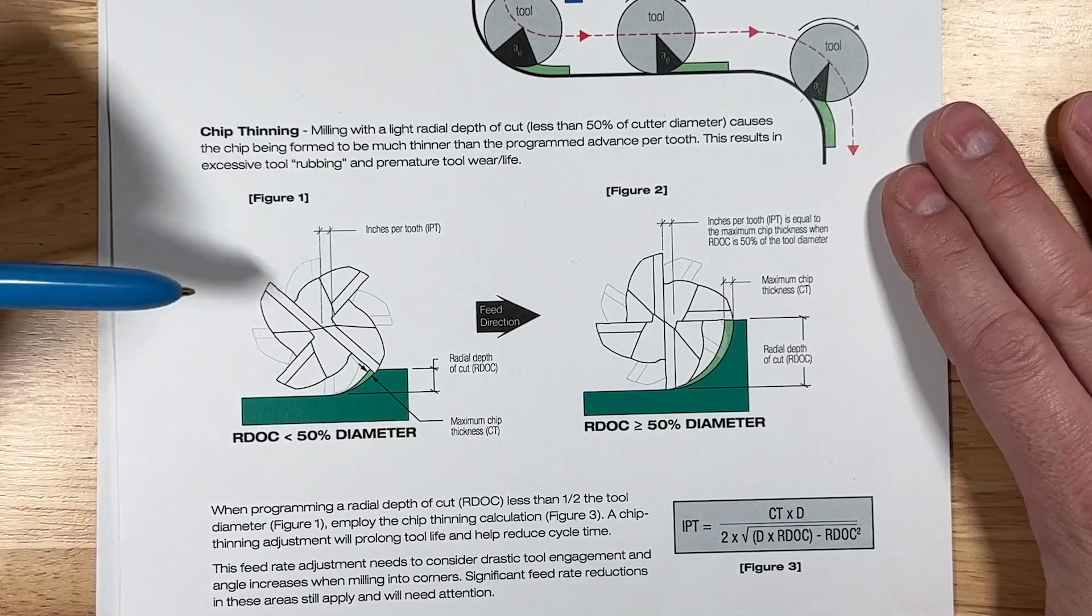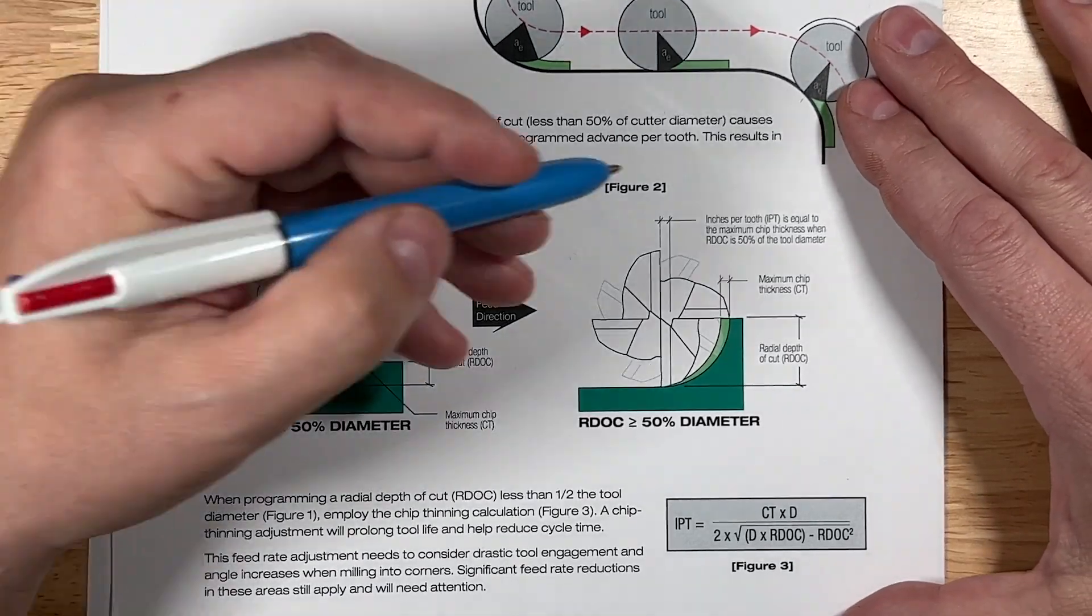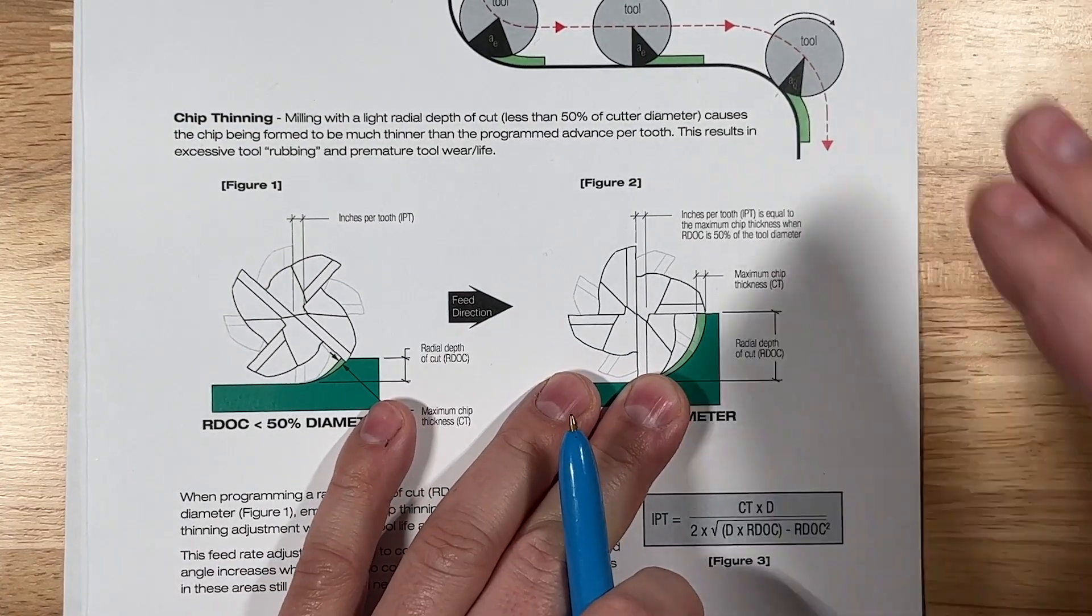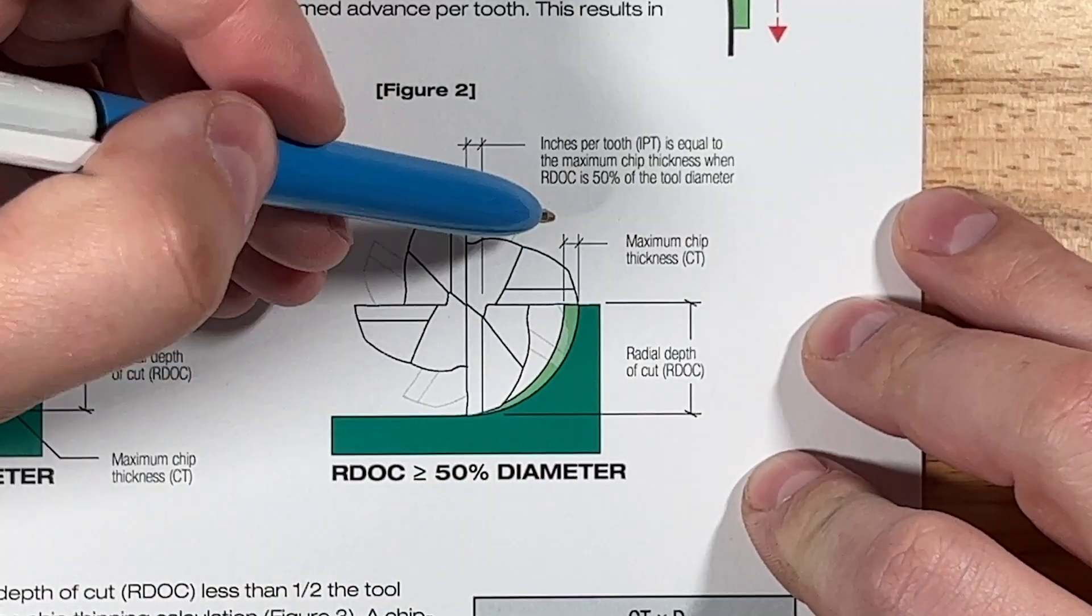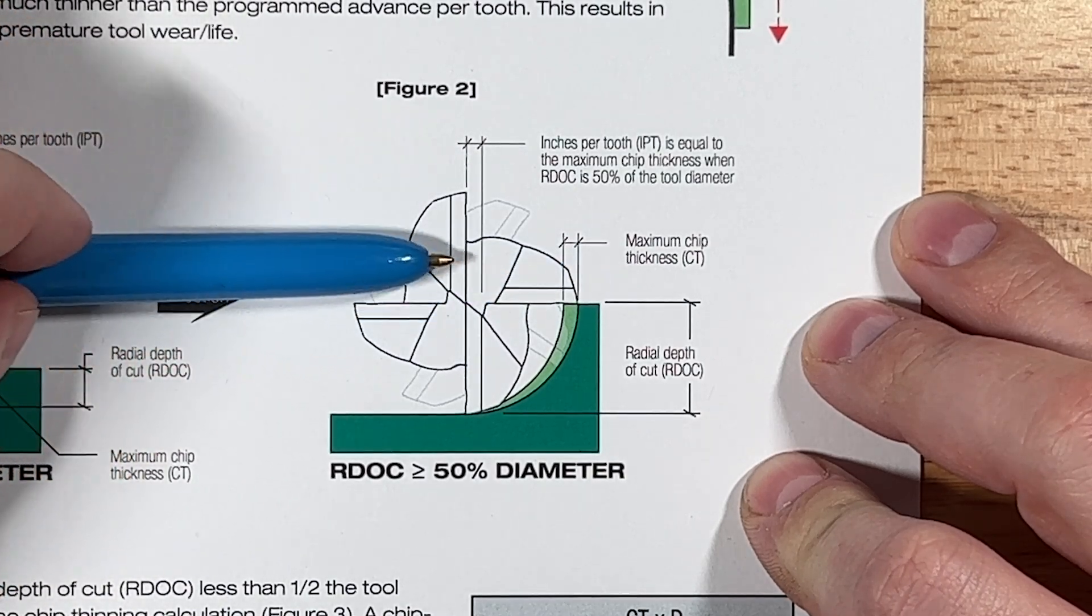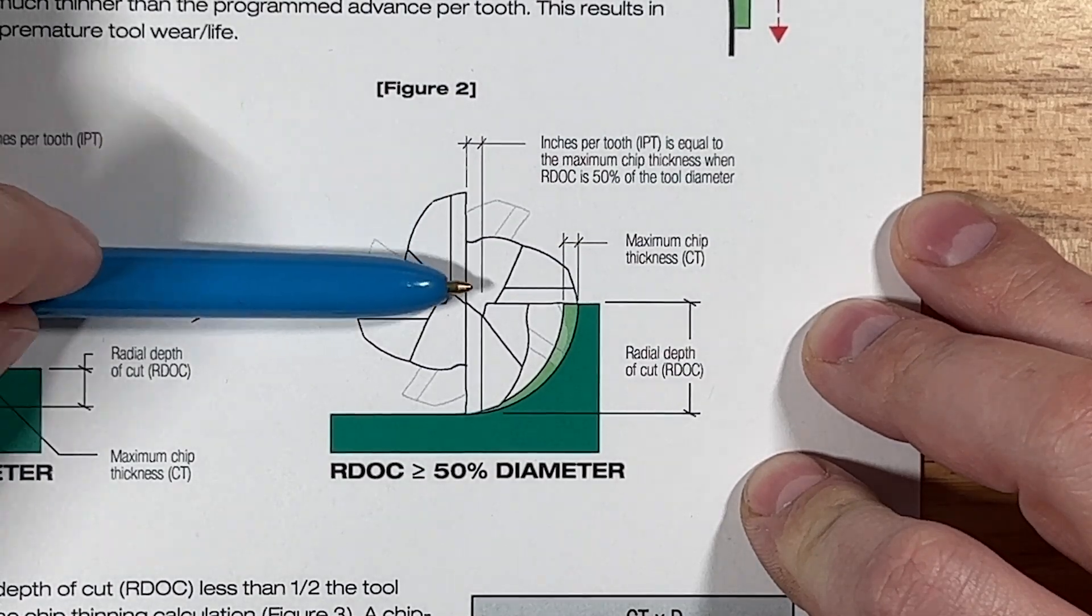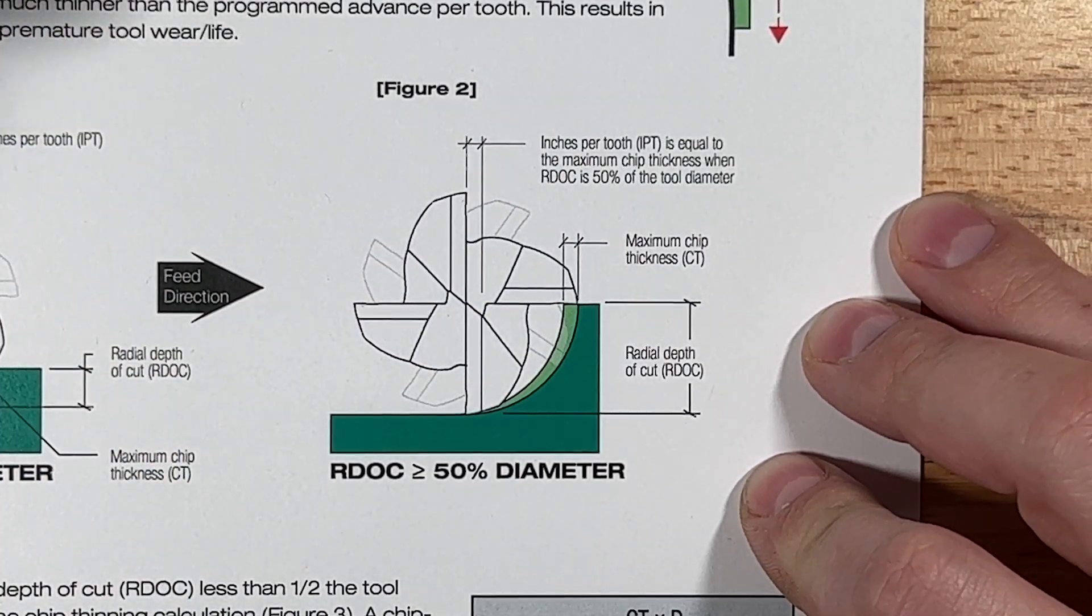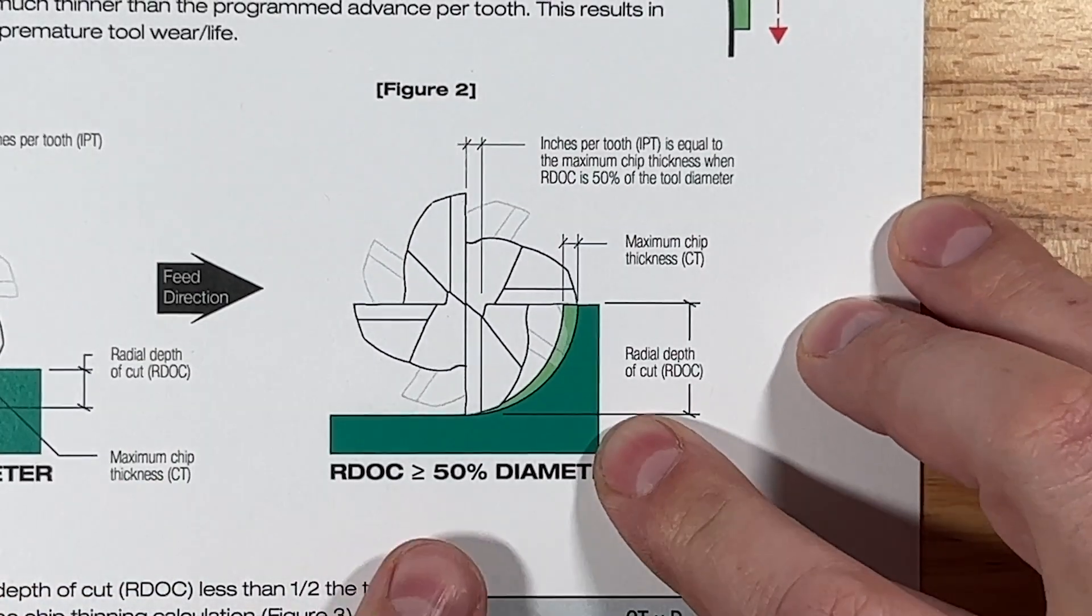Last but not least is chip thinning, and this is something that trips a lot of people up. I know that it took me a little while to kind of get my head around it. But when you're climb cutting, the chip starts out thicker and ends up thinner. So I'm going to zoom in even more on this particular spot right here. Your chip load means that your cutter is moving in this direction per flute. You see that your chip starts out thicker and then it gets thinner.